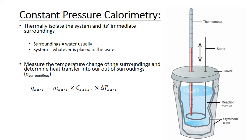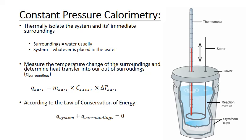We can then relate this heat flow into the surroundings using the law of conservation of energy to the heat flow out of the system, or vice versa. If the calorimeter is thermally isolated, that means all the heat lost by the system must be absorbed by the surrounding water. Alternatively, if the system gained heat, it must have absorbed all of that from the surrounding water. Either way, the signs of the heat exchange of the system and the surroundings should cancel each other out, giving us a sum of zero. So a positive heat gain by the system is balanced by a negative heat loss by the surroundings and vice versa.